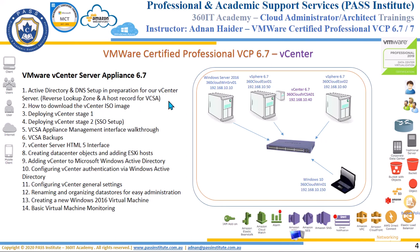In our environment, on our Windows Server we are going to install Active Directory and DNS. Once installed, we will create a reverse lookup zone and an A-record for VCSA. That will be the main configuration for Active Directory and DNS. Then we will download vCenter from the VMware website — I've already downloaded it — and start the installation. The installation goes in two stages: Stage 1 is extracting the files, and Stage 2 is the configuration of vCenter.